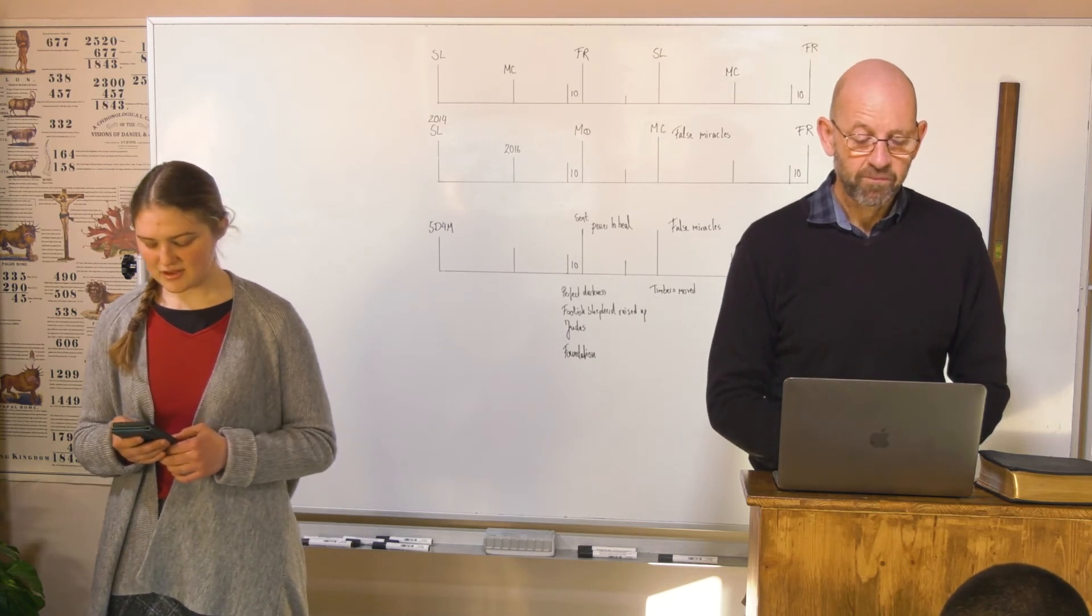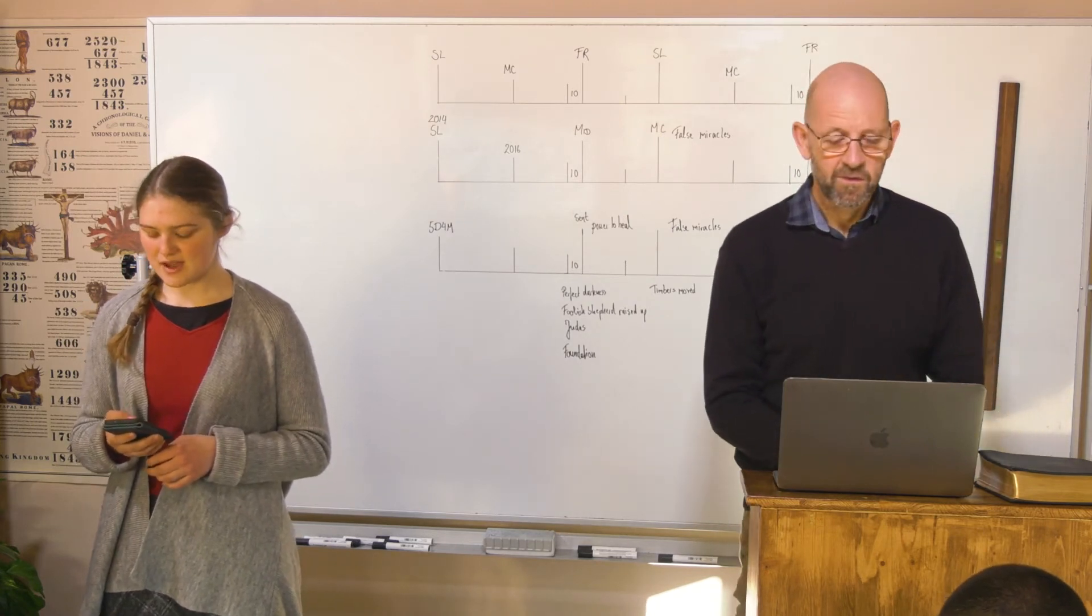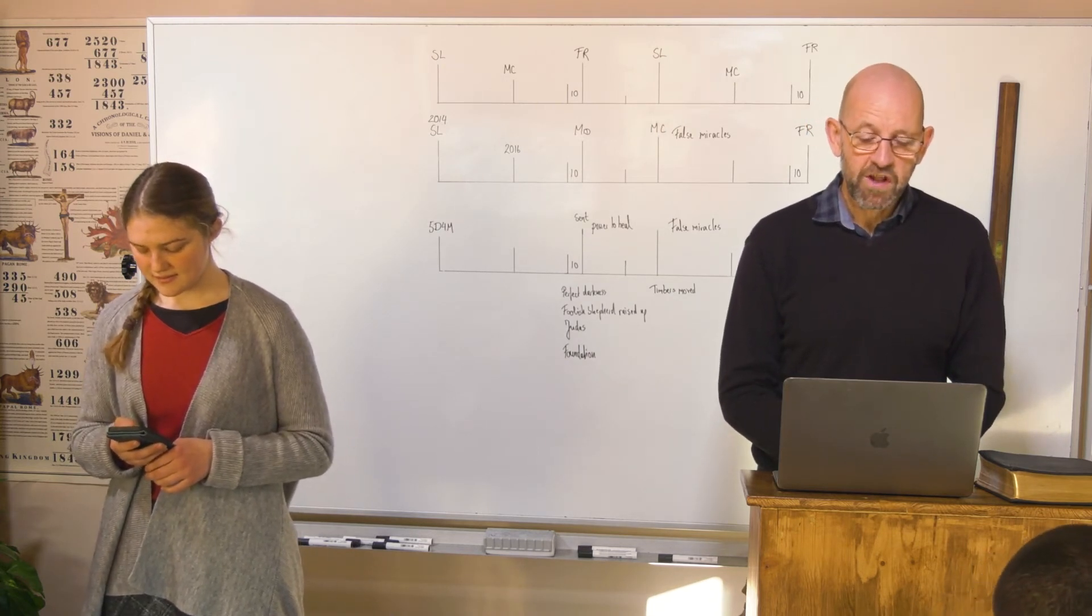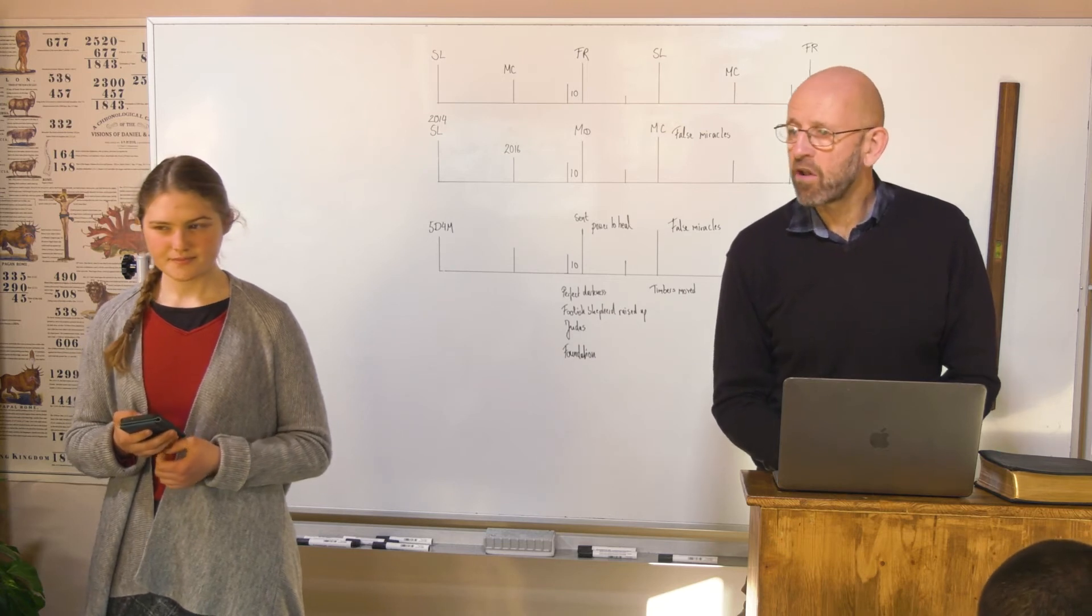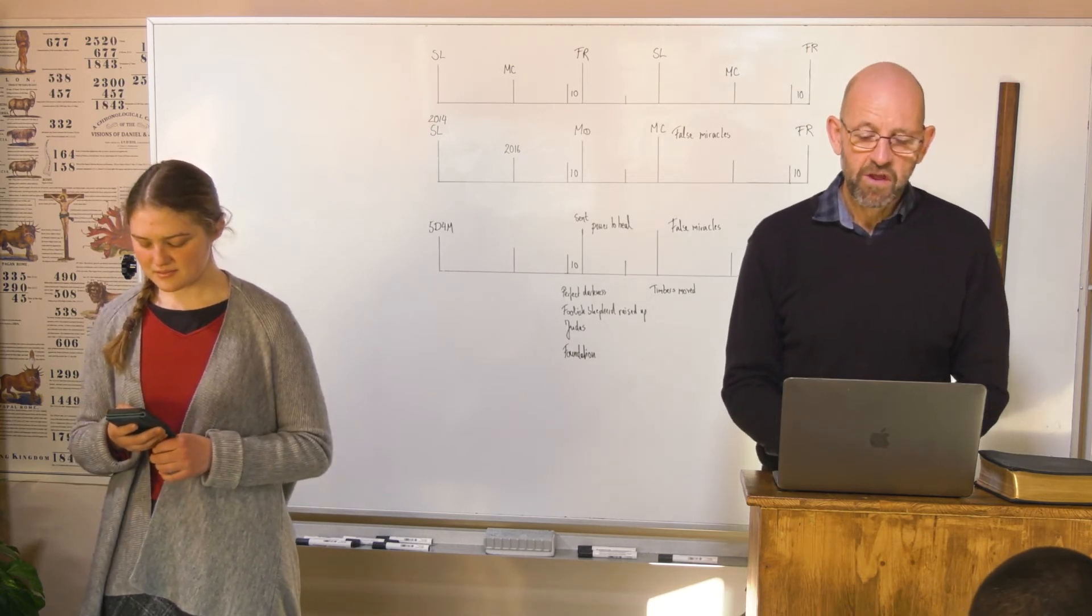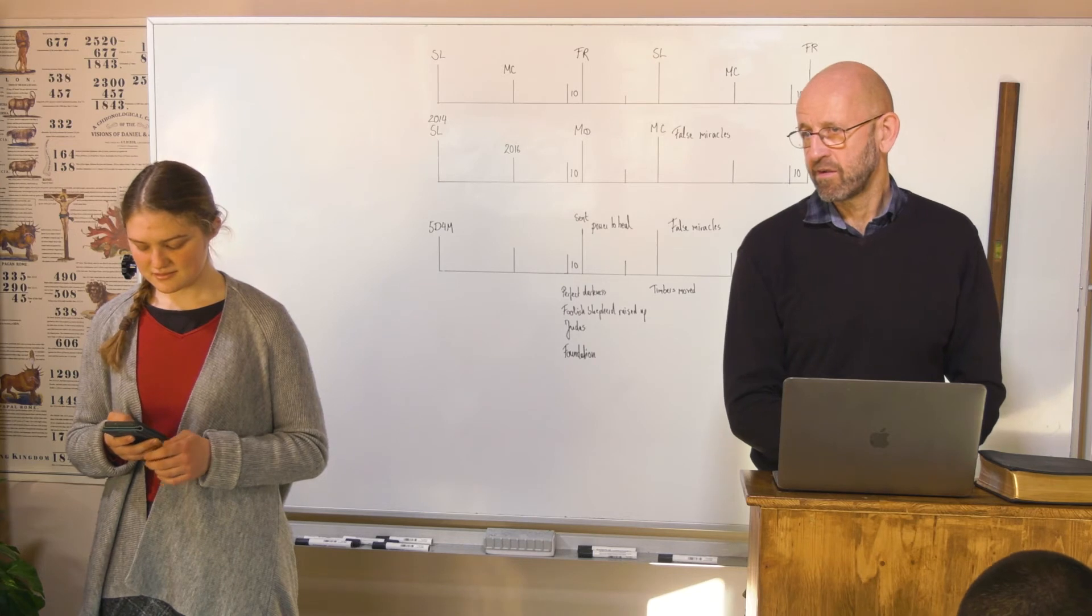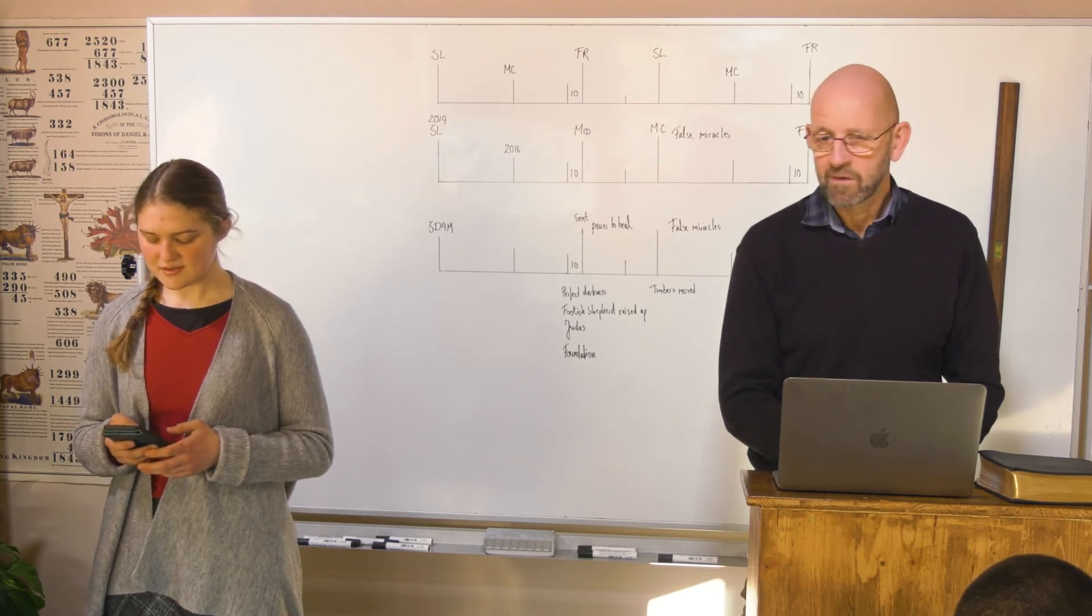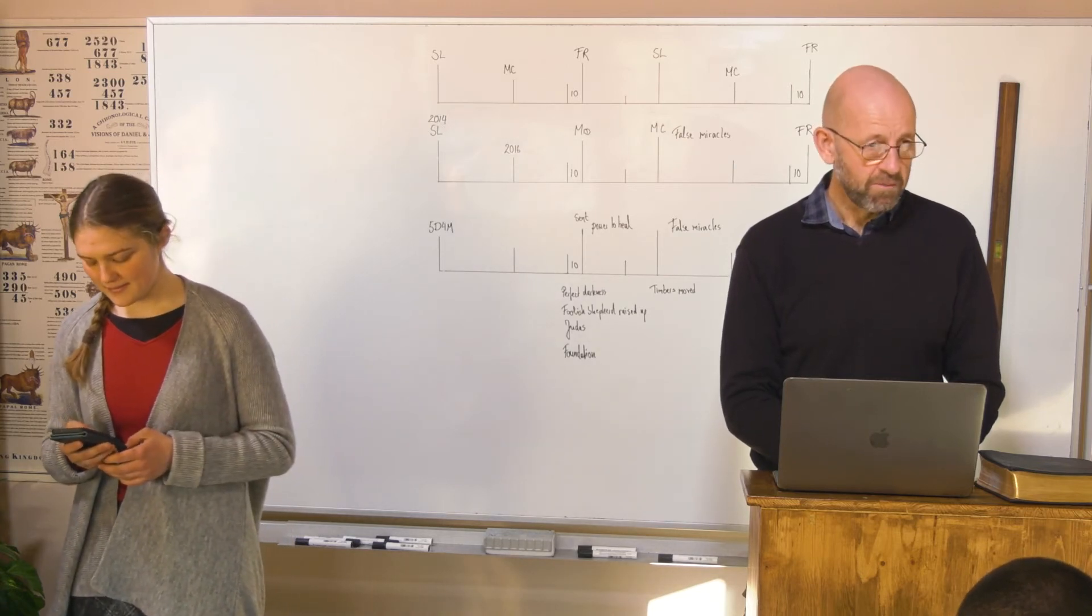Revelation 8:10 - The third angel sounded, and there fell a great star from heaven burning as it were a lamp. Satan fallen from heaven like lightning. This is what we just read in Ezekiel - they were likened unto burning lamps.